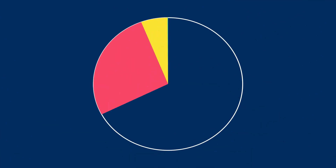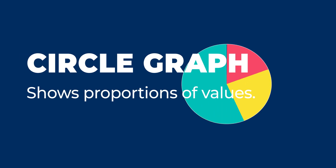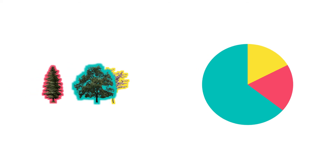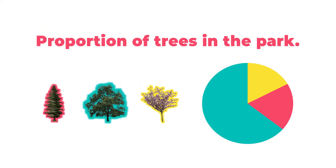A circle graph, also commonly called a pie chart, quickly shows proportions of values. So for example, a scientist who wants to show the proportion of pine trees, oak trees, and dogwood trees in a park could use a pie chart.